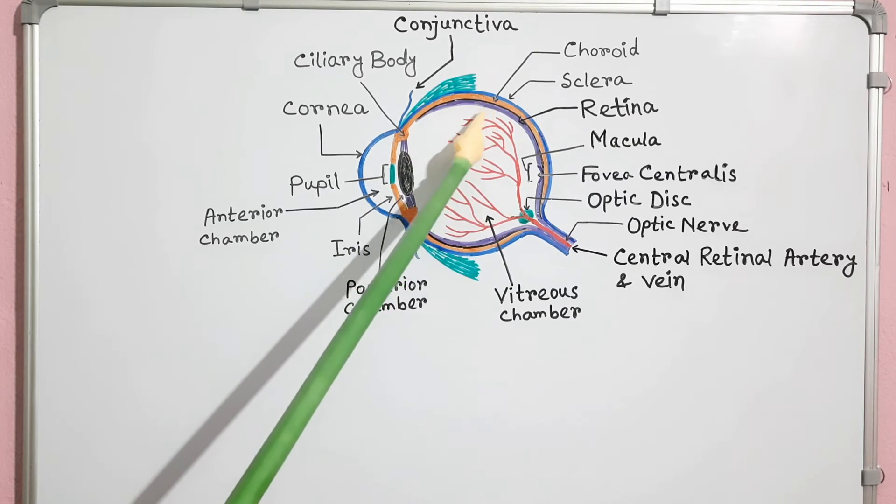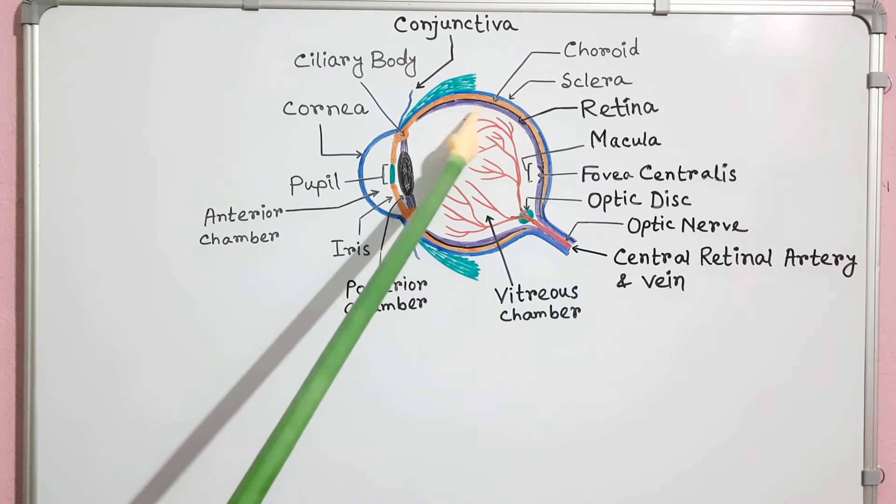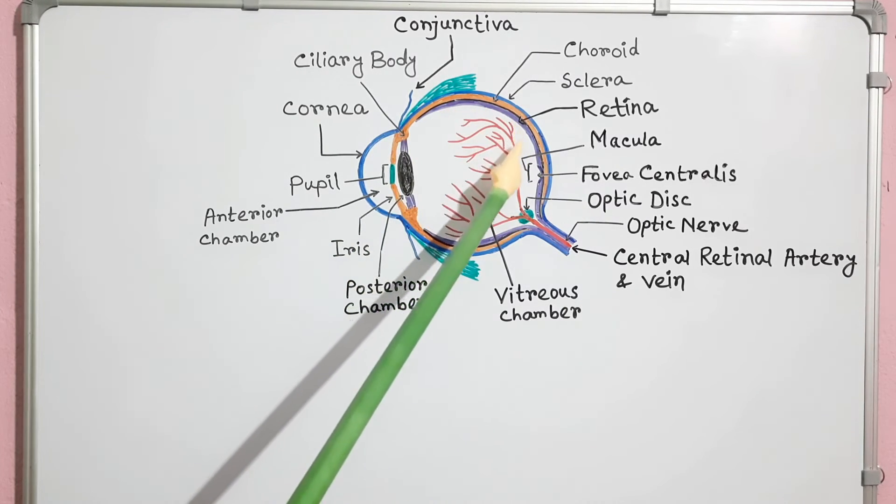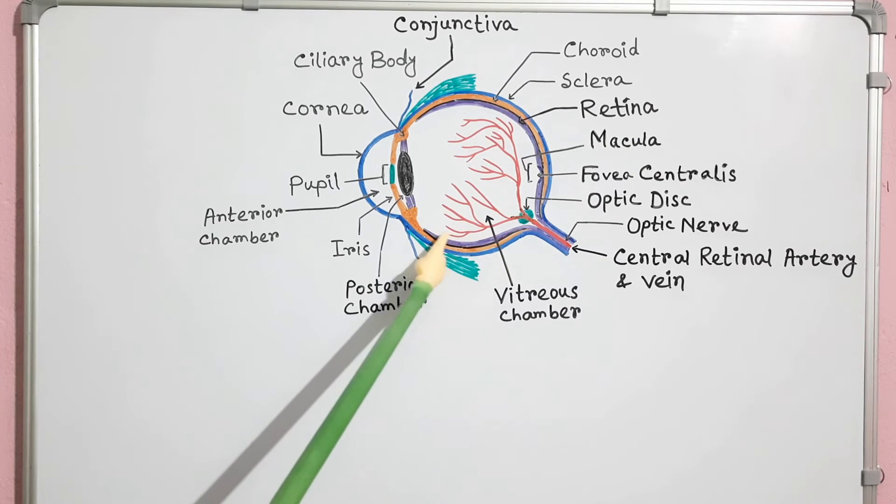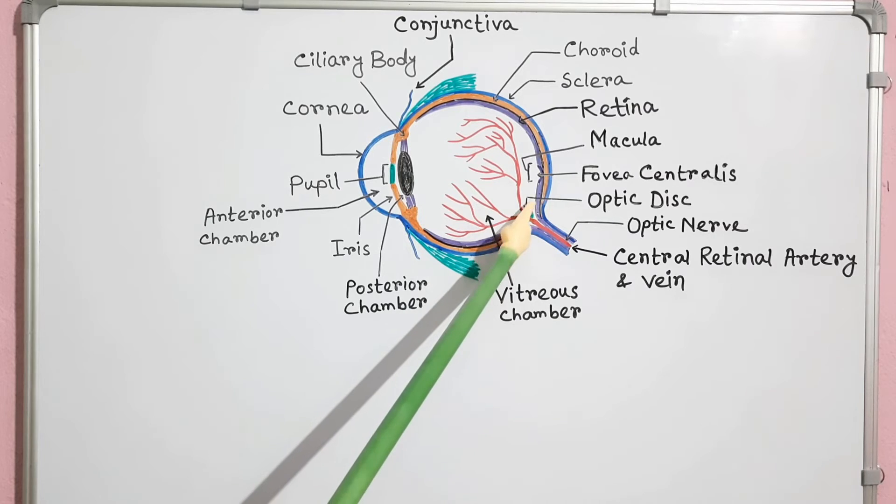Finally, this is the retina, the inner layer of the eye. It is a thin, delicate layer covering the inner surface of the eye posterior to the ciliary body.